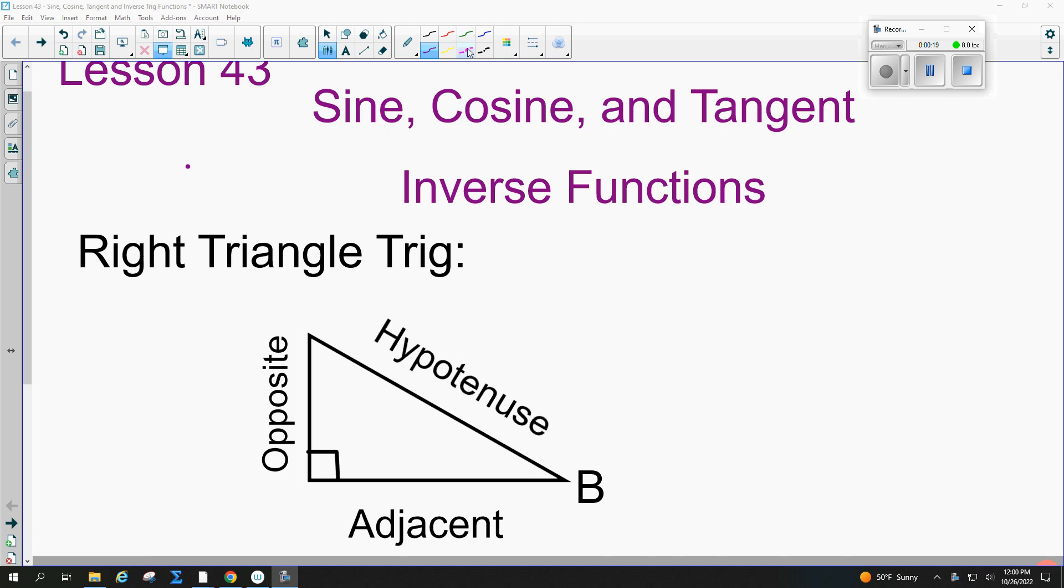If we're talking about angle B, which is this angle here, we need to be able to label all the sides. The hypotenuse is always opposite the right angle. And if I'm talking about angle B, then this side right here is opposite of angle B. And this other leg here is the adjacent side. It's next to angle B but it's not the hypotenuse.